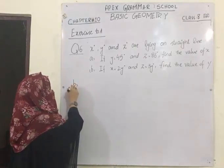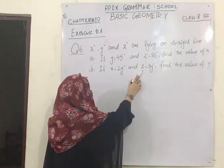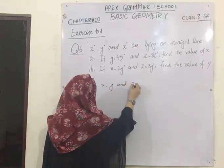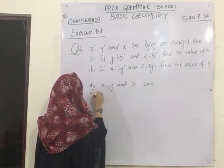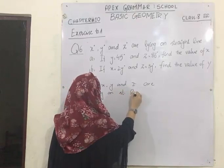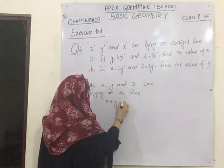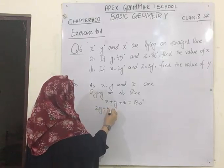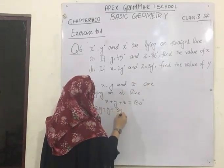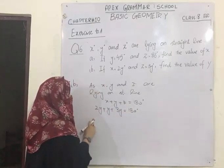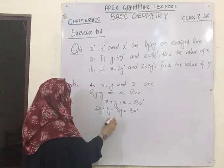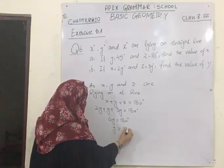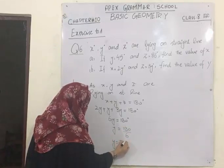Now going to part B, in which X is 2Y and Z is 3Y, and we have to find the value of Y. Since X, Y and Z are lying on a straight line, they are adjacent and add up to make 180 degrees. Substituting: 2Y plus Y plus 3Y equals 180 degrees. These are all like terms: 2Y plus Y is 3Y, and 3Y plus 3Y is 6Y equals 180 degrees. Since 6 is multiplied with the variable, dividing on the other side gives the value of Y as 30 degrees.